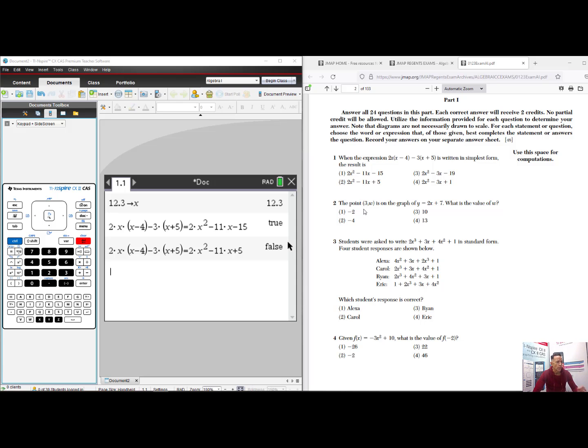Question 2. The point 3w is on the graph of y equals 2x plus 7. What is the value of w? We need to substitute in 3 for x. So we can type in 2 times 3, close parentheses, plus 7. When we press Enter, we get an output of 13. That is answer 4.